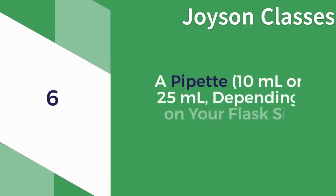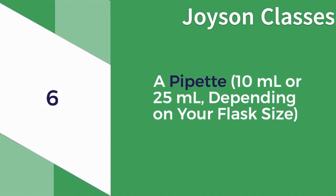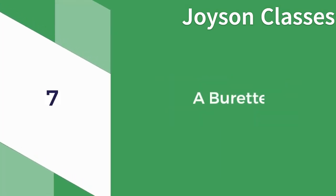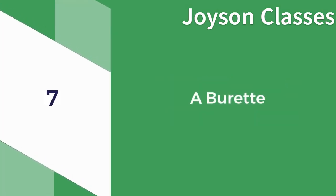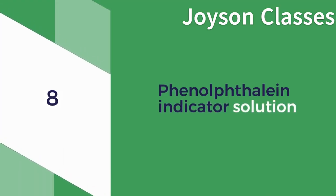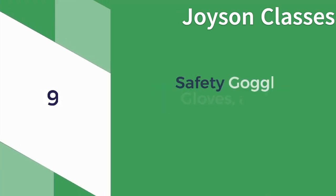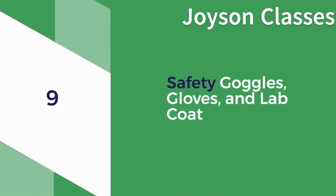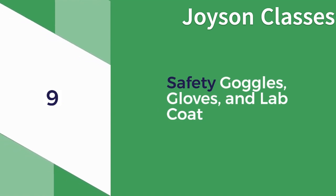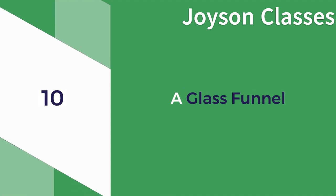6. A Pipette — 10ml or 25ml, depending on your flask size. 7. A Buret. 8. Phenolphthalein Indicator Solution. 9. Safety Goggles, Gloves, and Lab Coat. 10. A Glass Funnel.